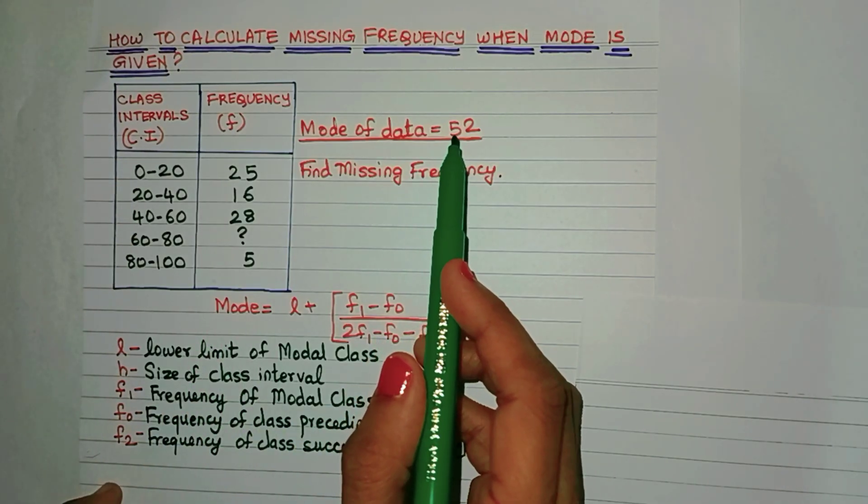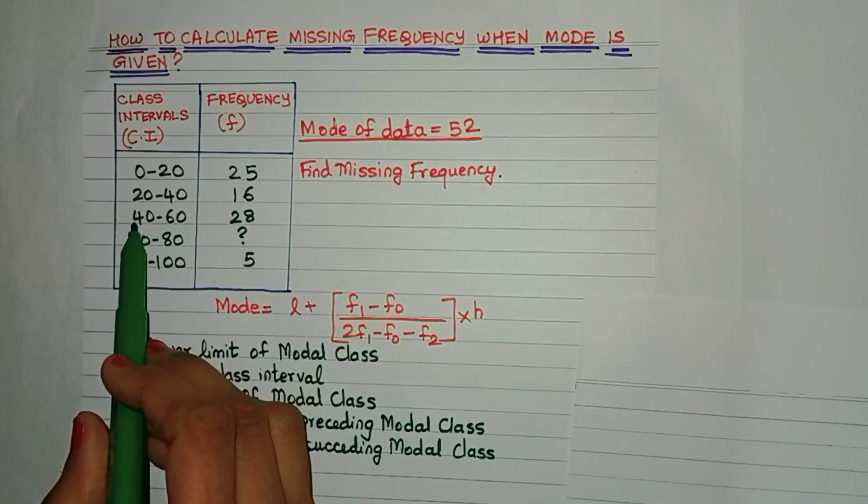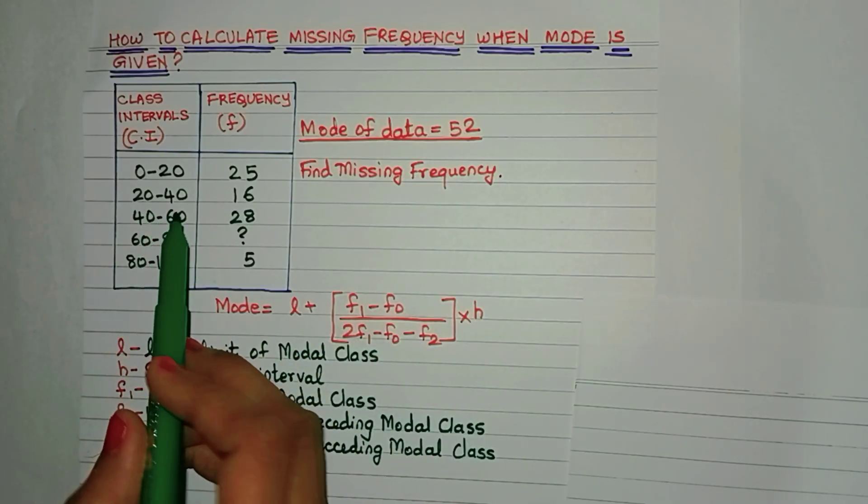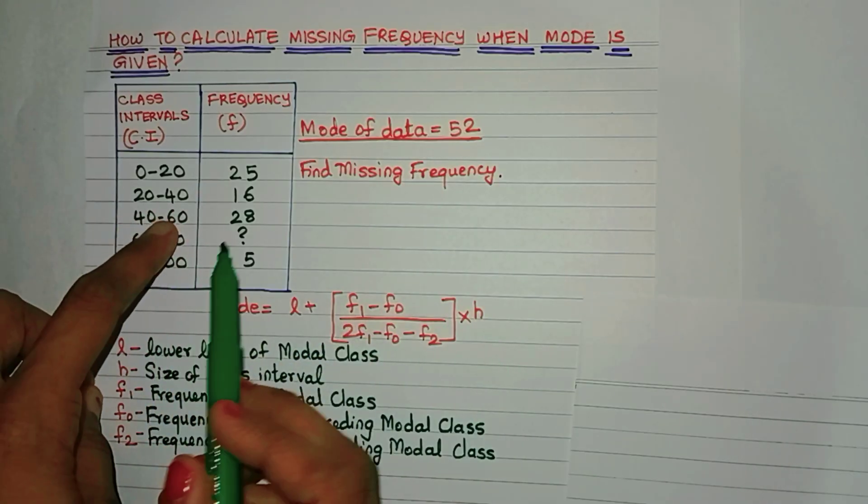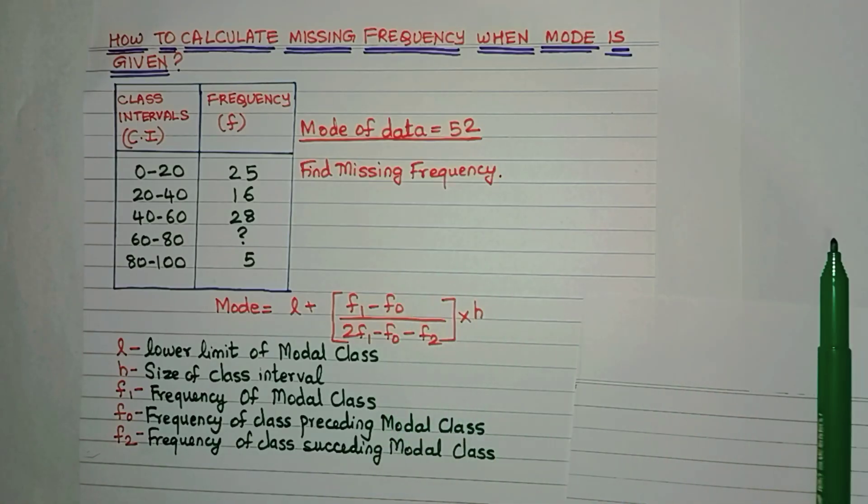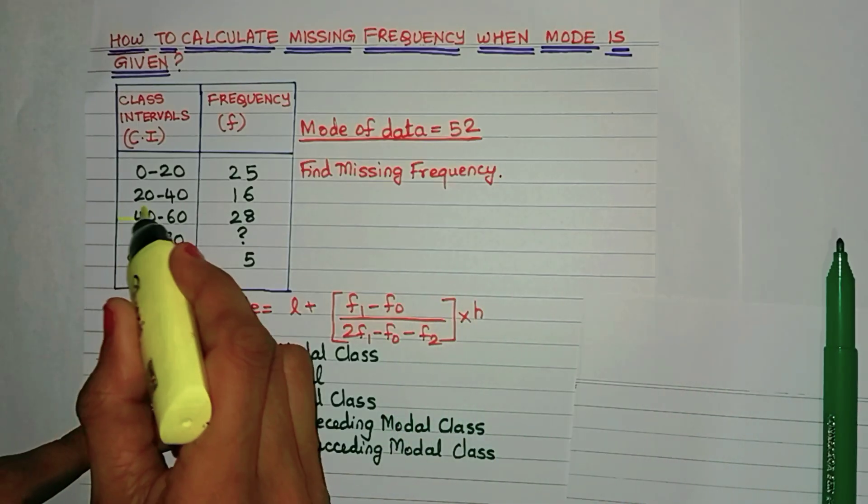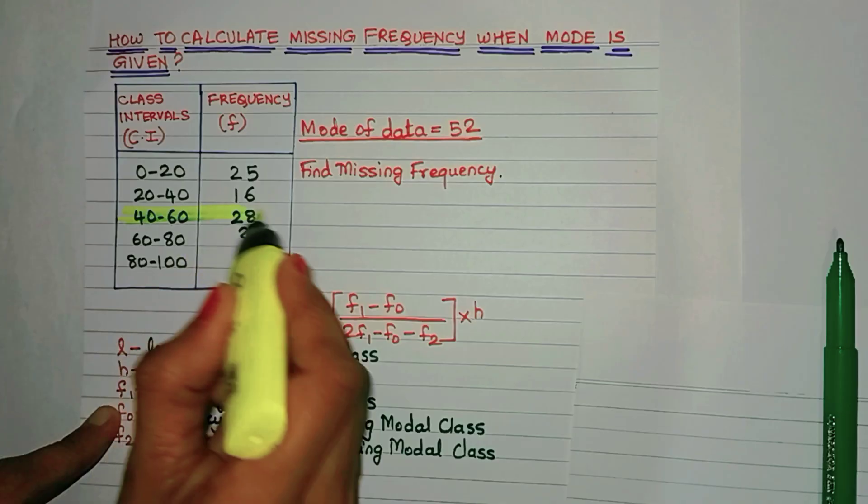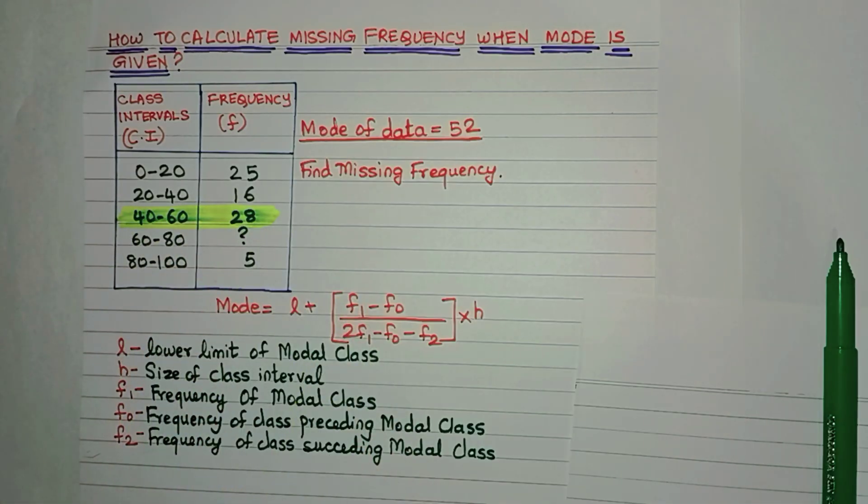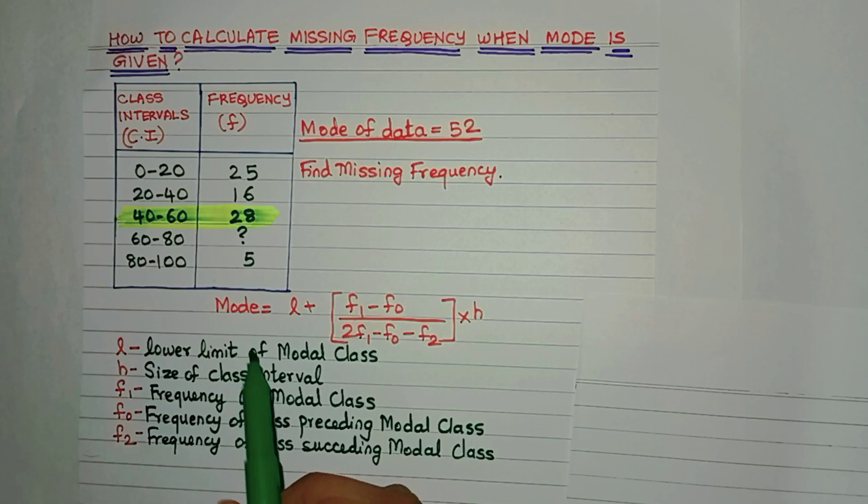Now in which class interval does 52 lie? Let's first find that out. Well, 52 definitely lies between 40 to 60. That means this is the class interval where 52 will lie. This is known as the modal class. So let me just highlight it. The modal class is the class where the mode is present.